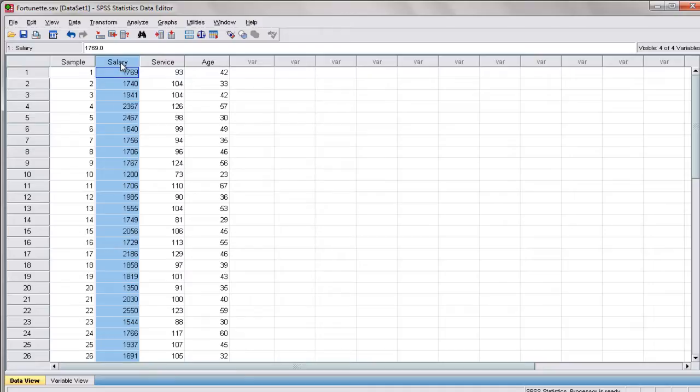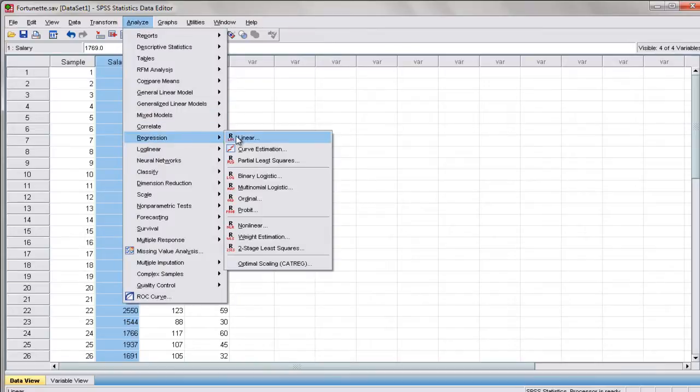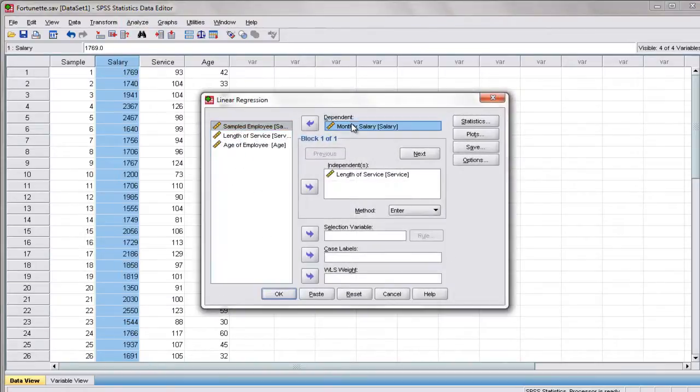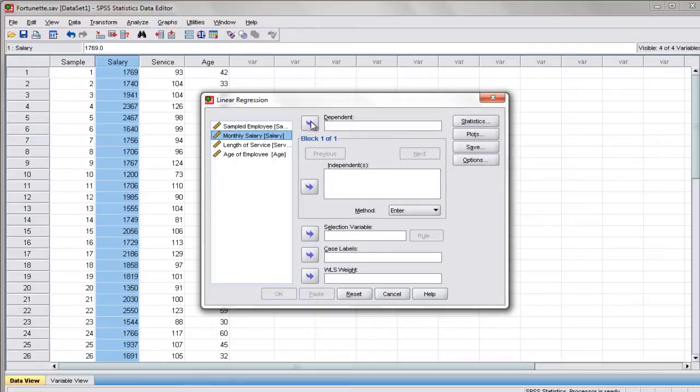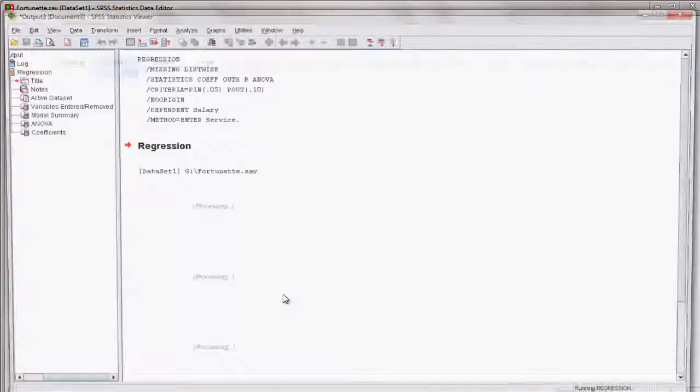So what we're going to do is run this. Let's go to analyze and then regression, linear. Our dependent variable would be monthly salary and our independent variable would be the length of service. Let me show you how to input it into this box. This is the monthly salary, the dependent variable, enter that here. And the length of service also here. Now let's press ok so that we can have the output.